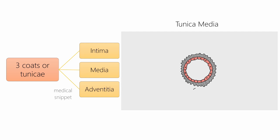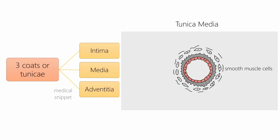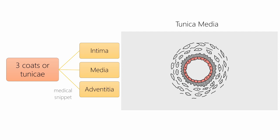Tunica media is the thickest layer of the arterial wall. It consists of two components arranged in concentric layers: smooth muscle cells and elastin fibers. Smooth muscle cells contract and relax causing vasoconstriction and vasodilation, while the elastin fibers allow the arteries to expand during systole and contract during diastole, which causes the blood to propel forward.